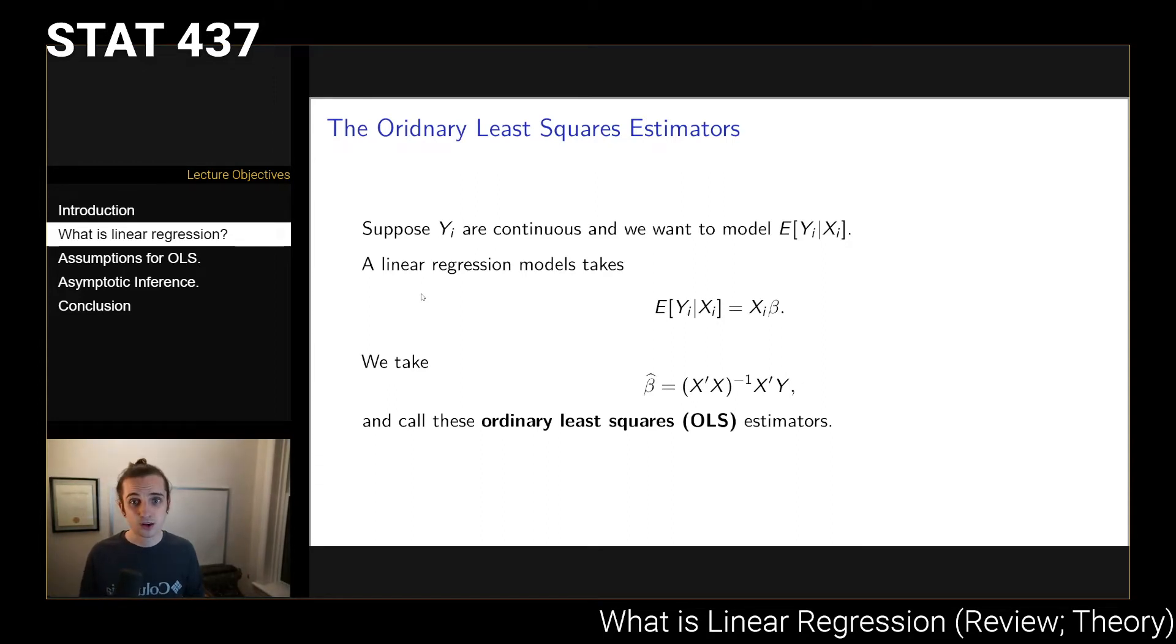Essentially, we want to know what is the mean relationship between some outcome variable, which we call Y, and a set of variables that are our explanatory factors, the Xi's. A linear regression model says that the conditional mean of Yi given Xi is given by this linear combination Xi times beta.